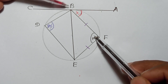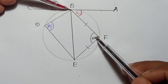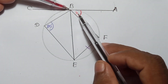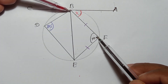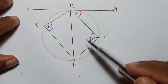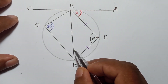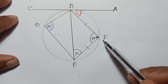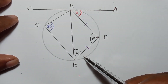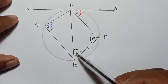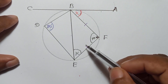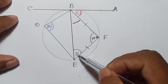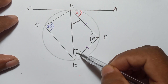In this situation — where you have a tangent and a chord meeting at the tangent point — the angle between the tangent and the chord equals the angle that chord subtends at the circumference. So if this angle is x, that subtended angle is also x. Now, the data tells us that BF equals FE, so triangle BFE is an isosceles triangle.